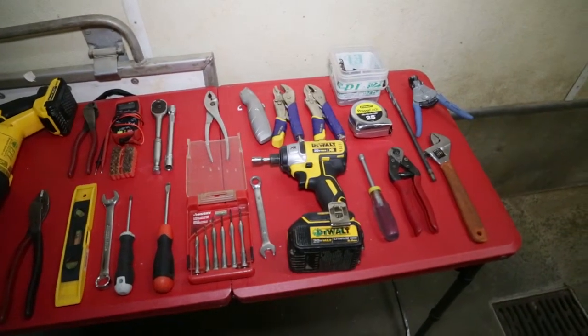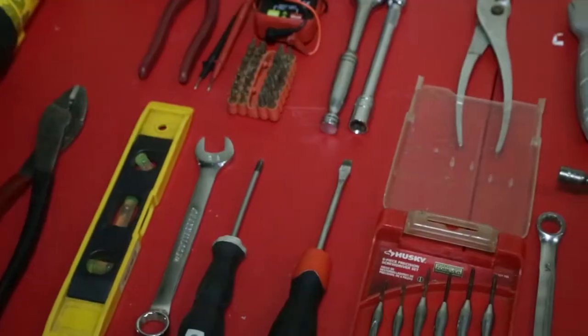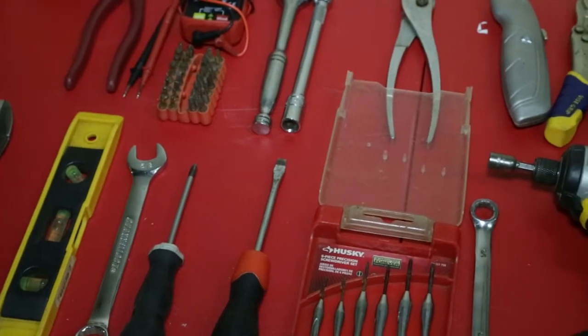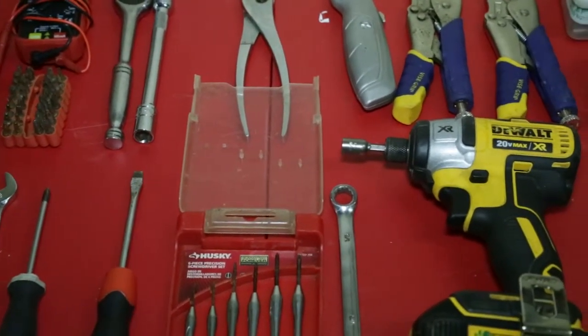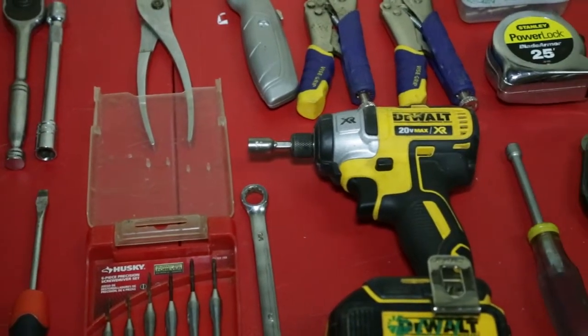Pipe cutter, small flat and Phillips screwdriver, socket half inch or 13mm with extension and ratchet, typical flat and Phillips screwdrivers, utility knife, vice grips, voltmeter, wire stripper and wire crimper.